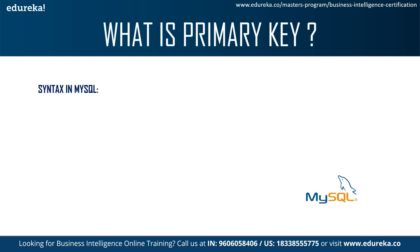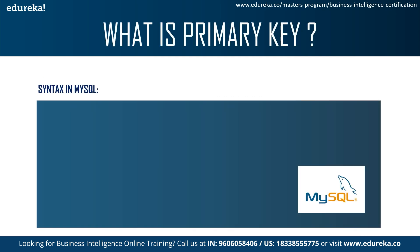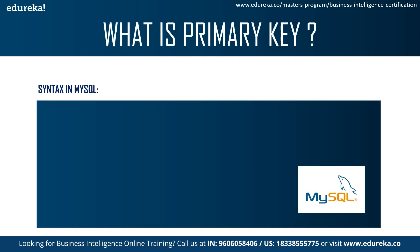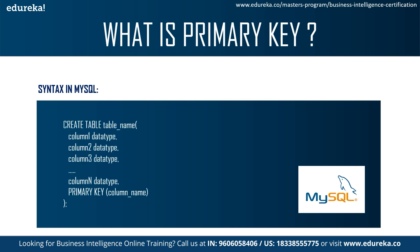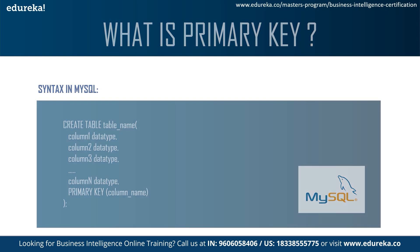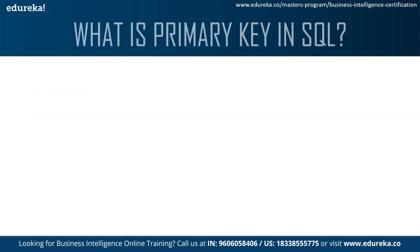Now let's see how to write the syntax for a primary key. To set a primary key in a table we use the CREATE TABLE syntax with the table name, then define the column names with their data types. We can have as many columns as required, and lastly we mention the primary key — the column which will serve as the primary key.